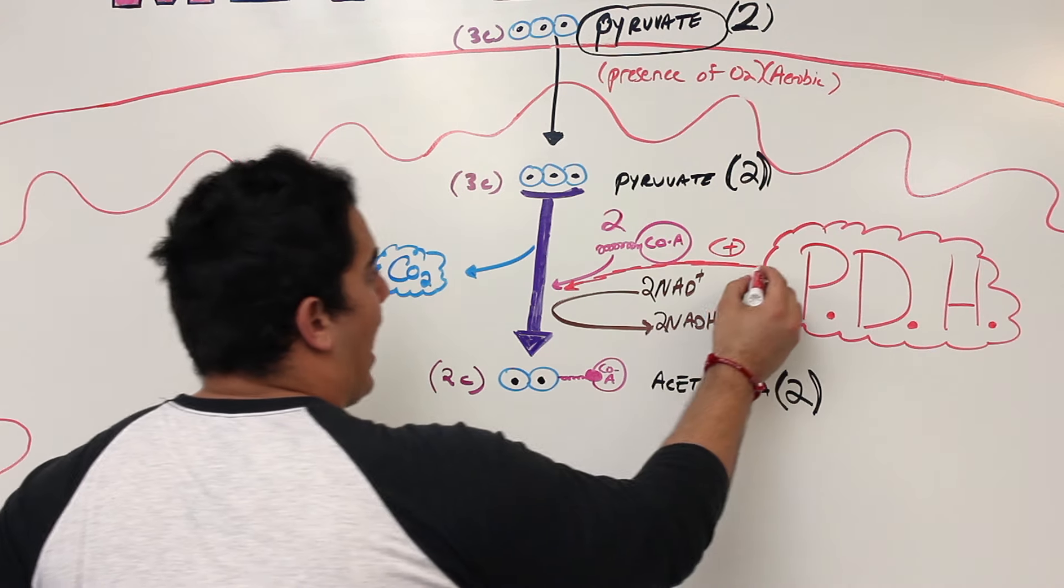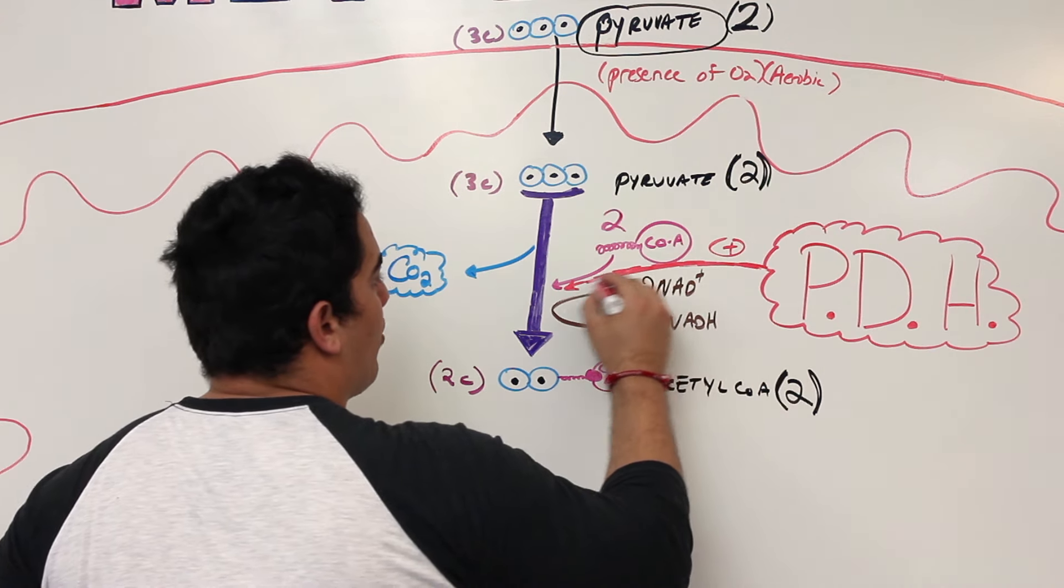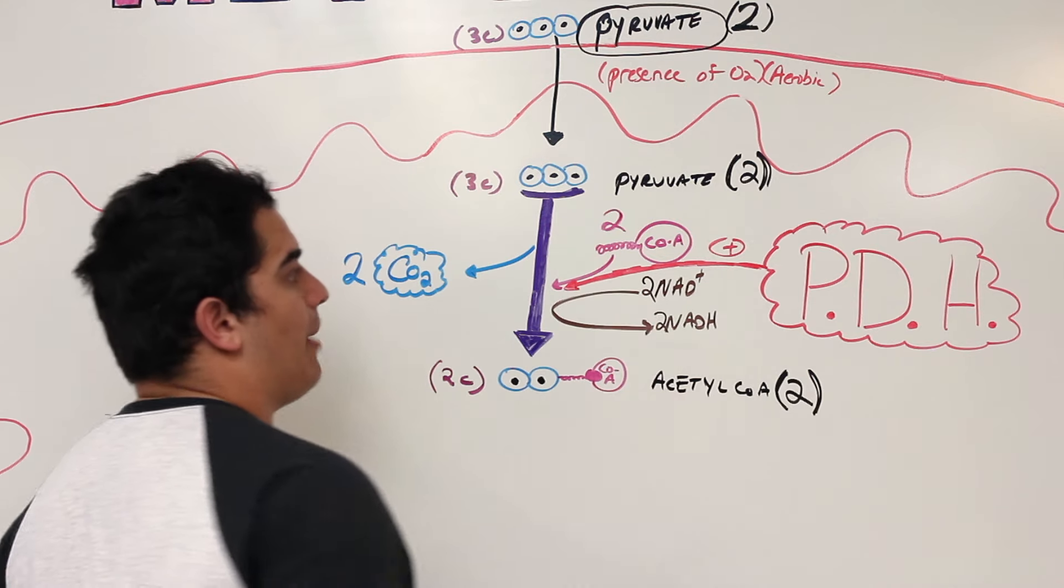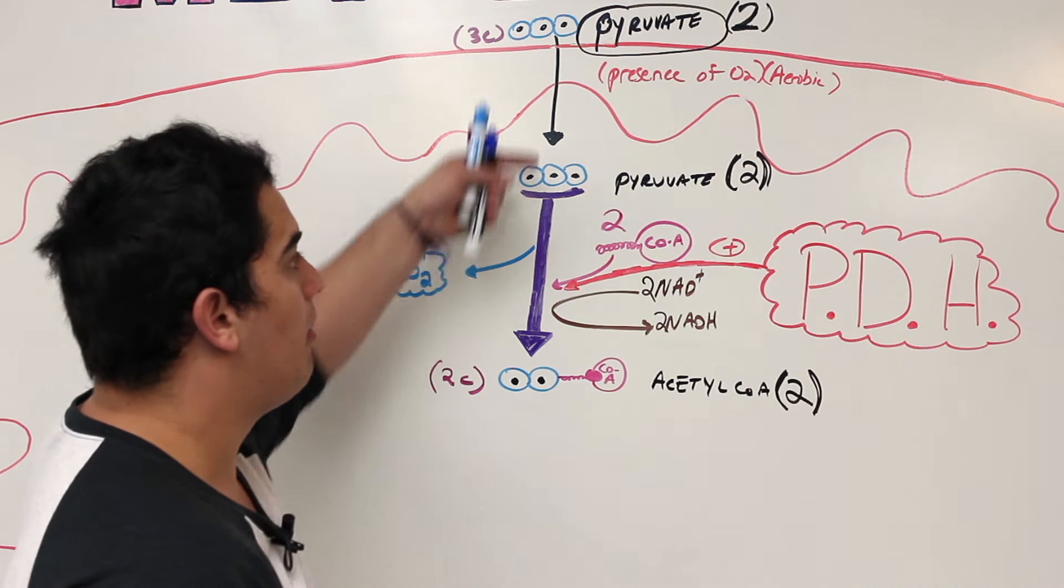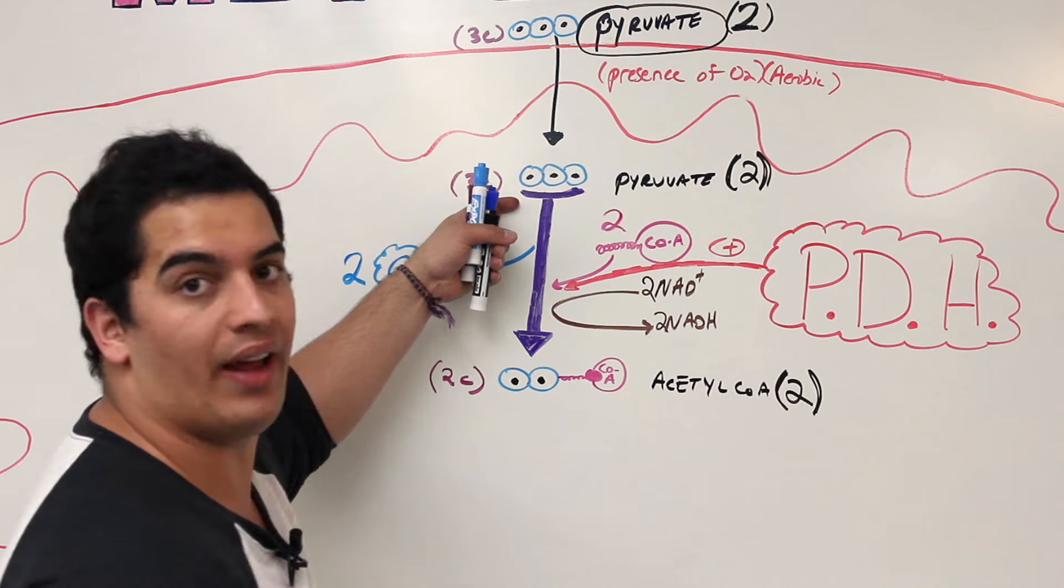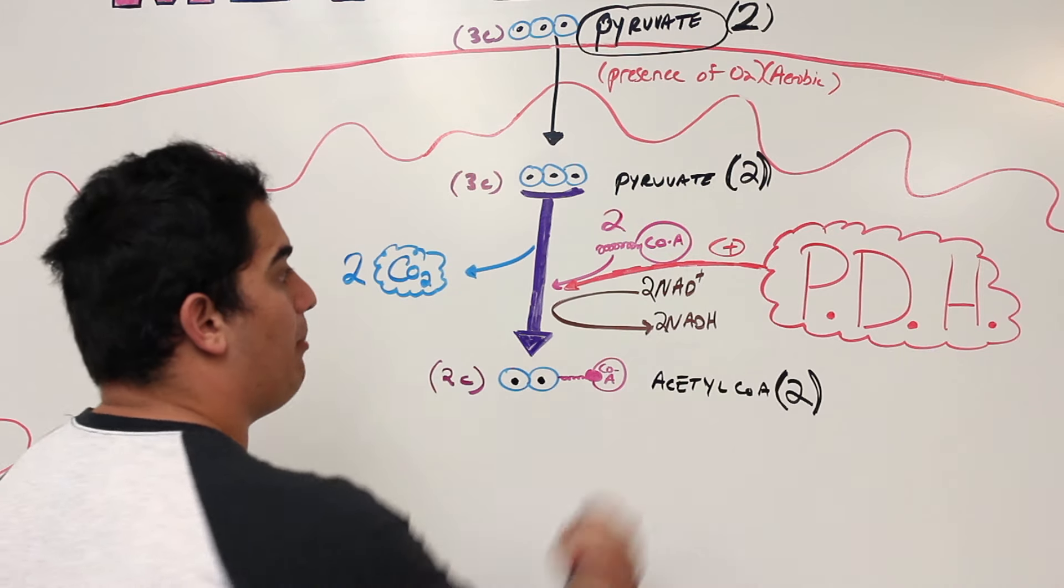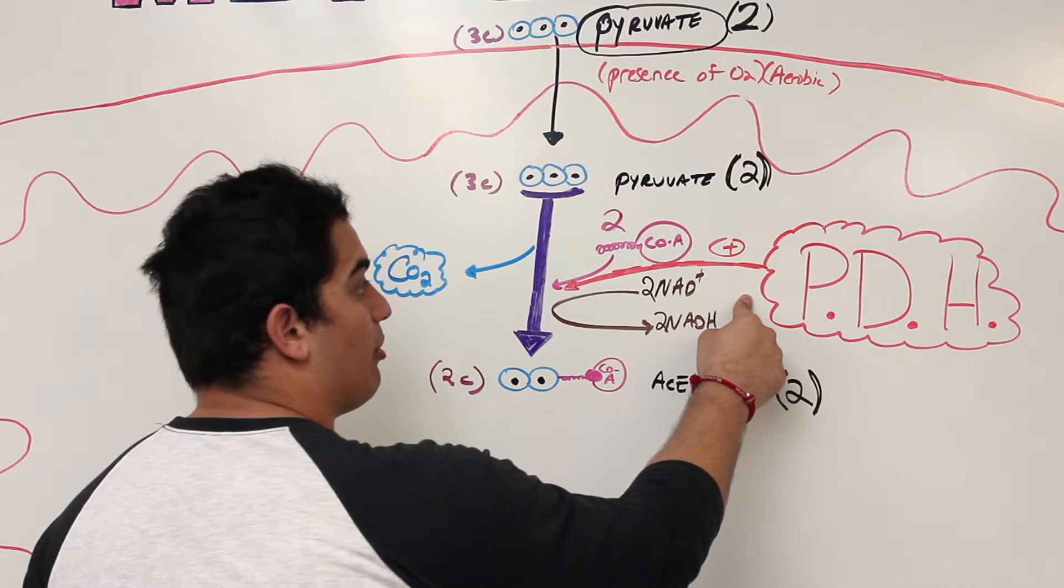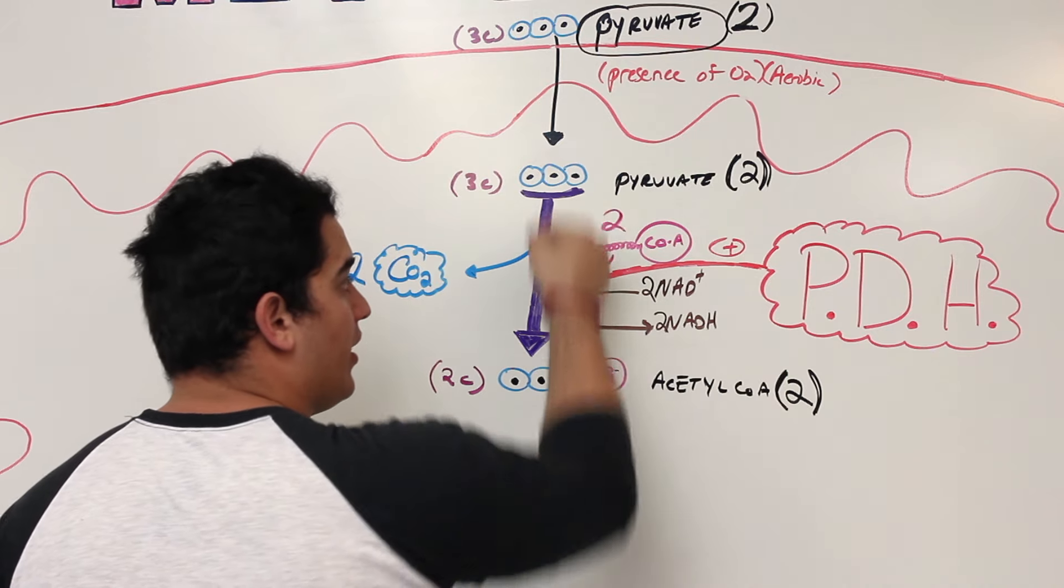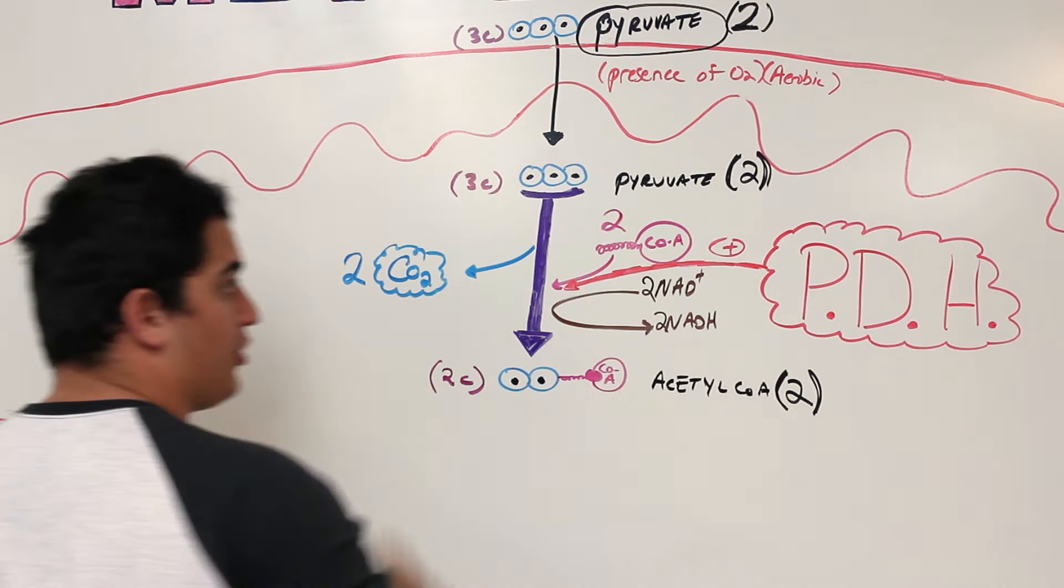Now whenever this happens, remember that this is an irreversible step. In other words, this step can't go backwards. I can't go from acetyl-CoA to pyruvate. So remember that PDH is not going to be a reversible enzyme. It's irreversible. It only works in unidirectional, not bidirectional, only one direction.